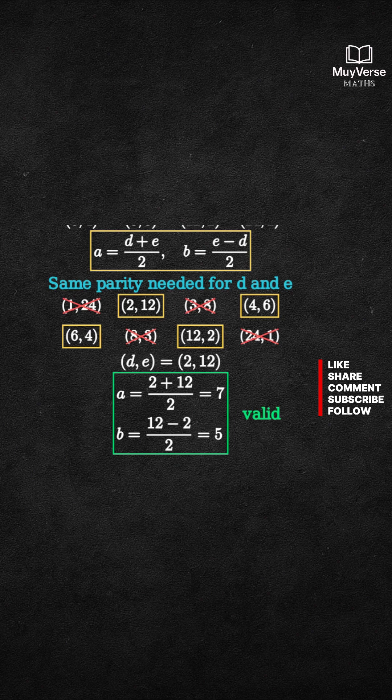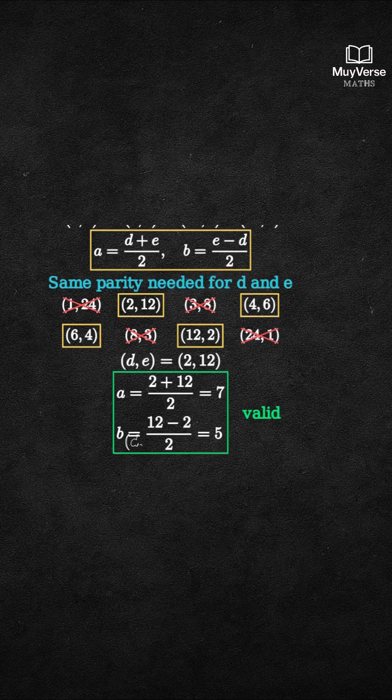Now, d equals 6 and e equals 4. Then a equals 5, but b equals (4 minus 6) over 2 equals negative 1, which is not positive. Reject.